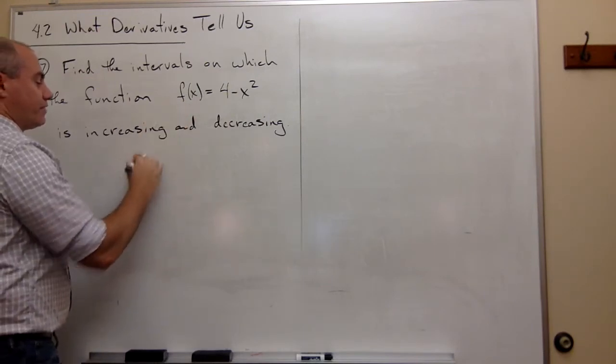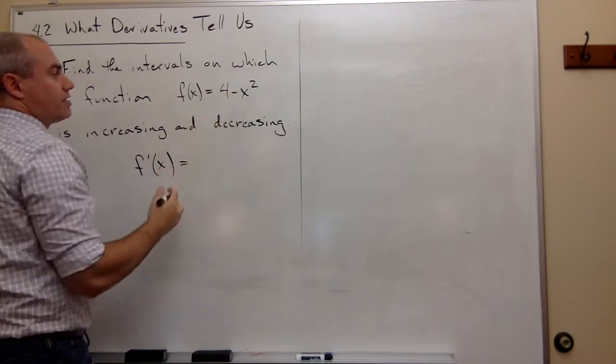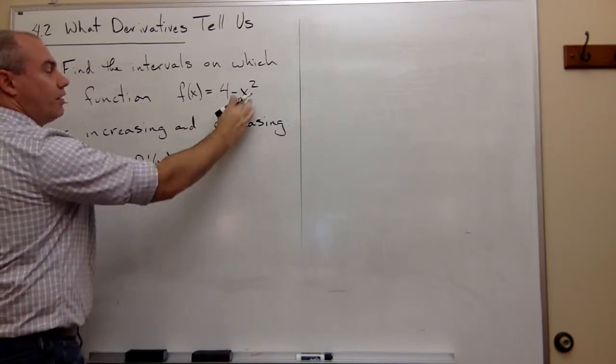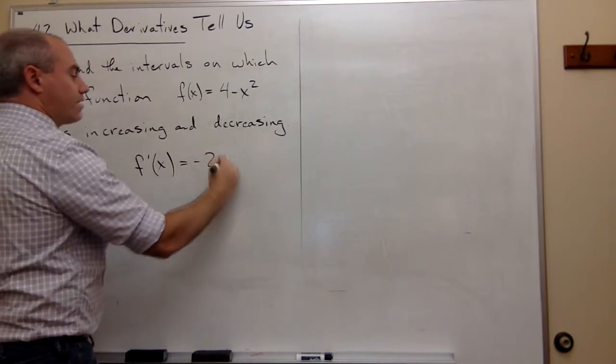If I take the derivative of this function, I get f'(x) equals, the derivative of 4 is 0, the derivative of -x² is -2x. So f'(x) = -2x.